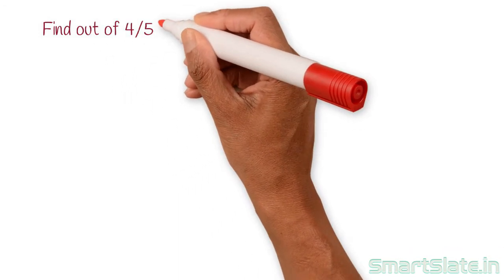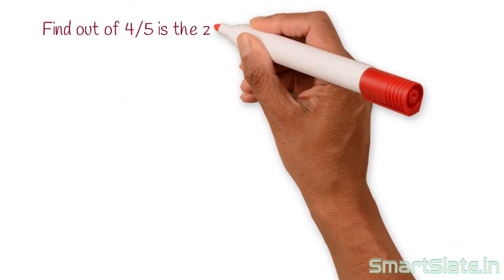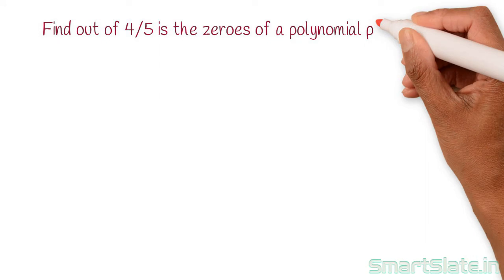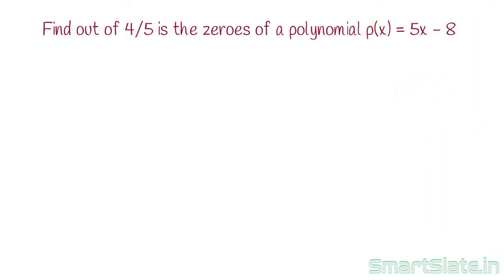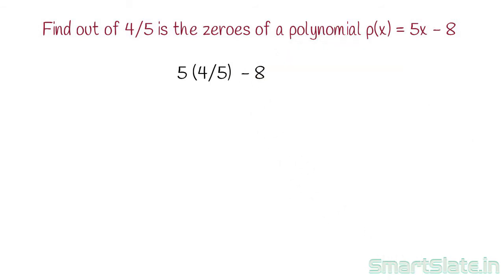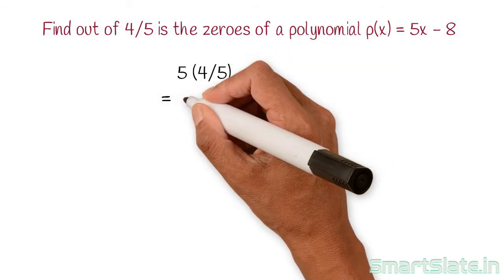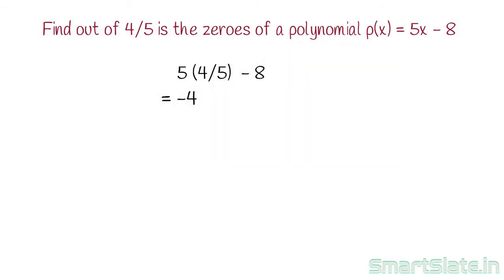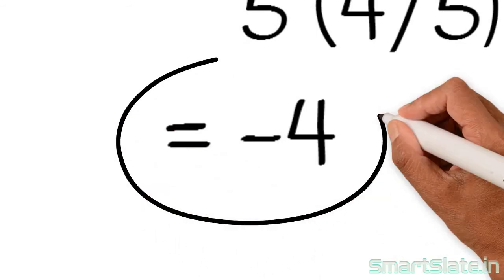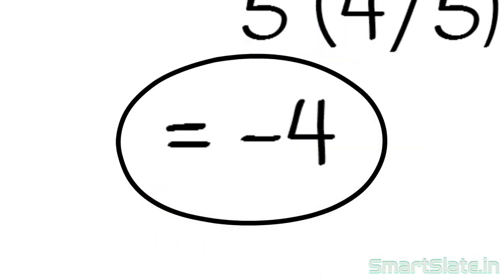Consider another example. Find out if 4/5 is a zero of the polynomial 5x minus 8. Replace x by 4/5: 5 into 4/5 minus 8, which is minus 4. Since the value is not 0, 4/5 is not a zero of the given polynomial.